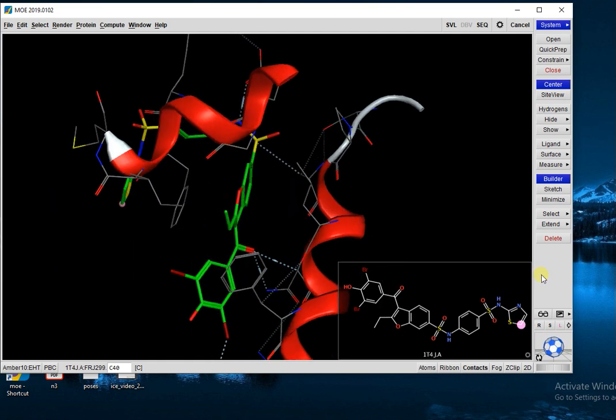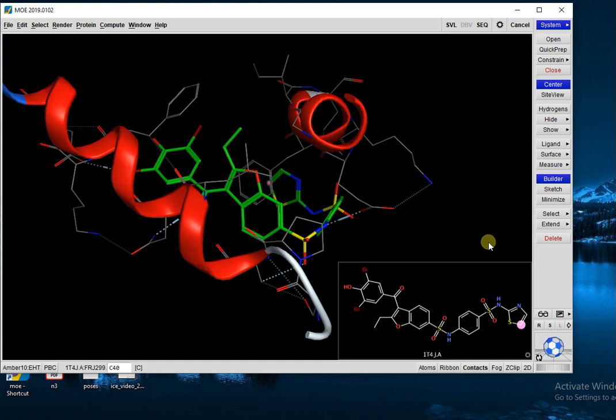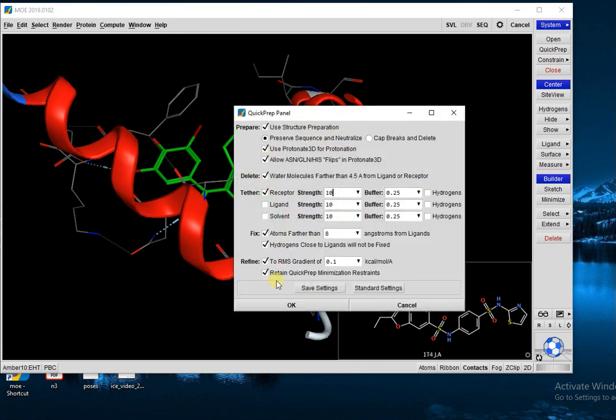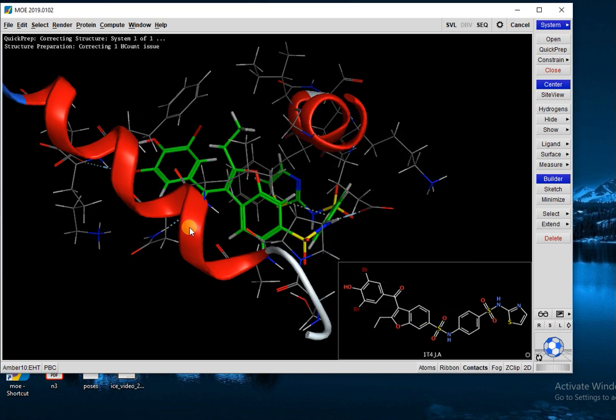After changing the color and removing water molecules or any other extra ligands that are attached, next step is Compute, Prepare, and Quick Prep. In Quick Prep, keep the gradient at lower and press OK. It will take some time.